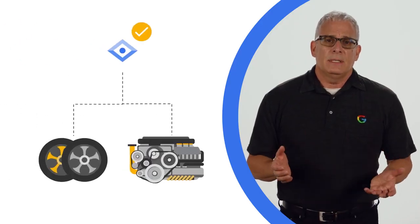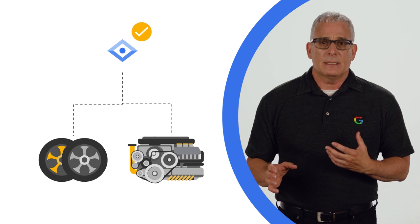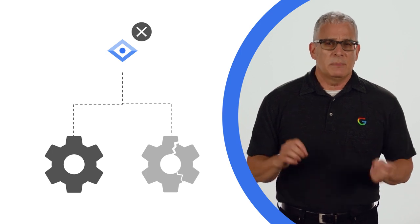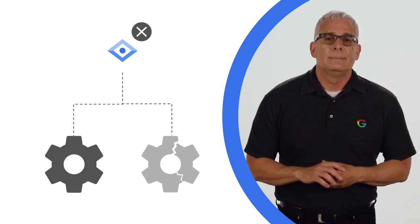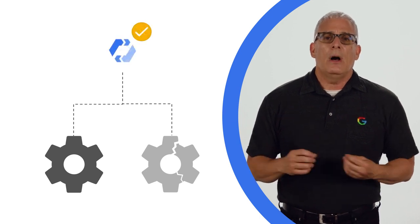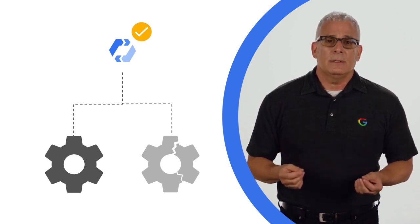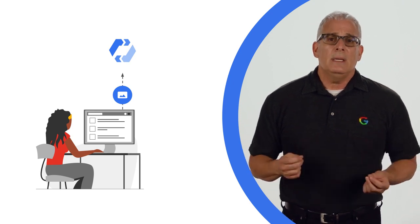But categorizing images is sometimes more complex. Think back to the example where ML was used to recognize defects in car parts. Vision API can tell the difference between generic images found in Google's database, like the difference between a wheel and an engine, but it won't be able to identify good or defective parts for a specific car manufacturing company. In this case, a developer could use AutoML Vision API, which automates the training of your own custom machine learning models.